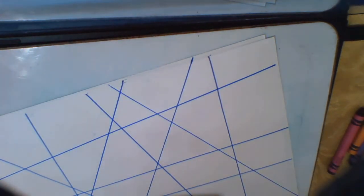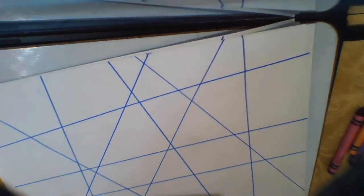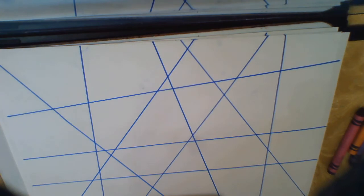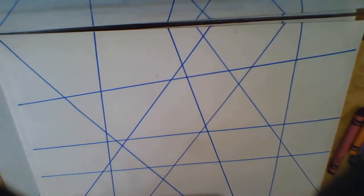So continue drawing, continue to draw straight lines across the paper in various directions, as you saw me here. The more lines you draw, the more coloring spaces you're going to have. And so the cool thing about this art project is that there is no wrong way to do this, because it's abstract.